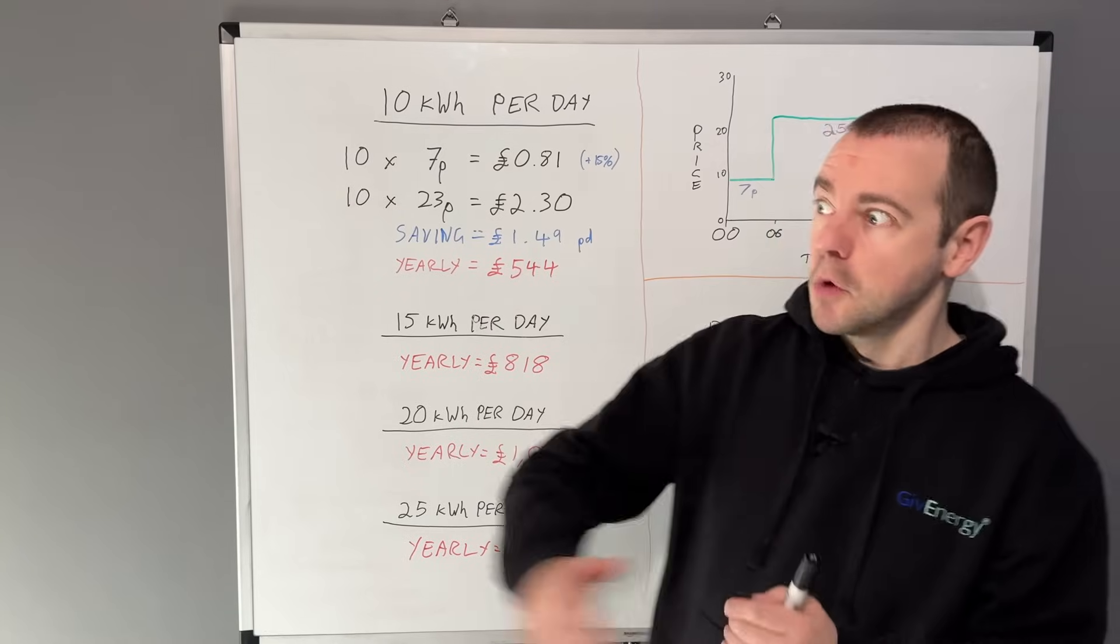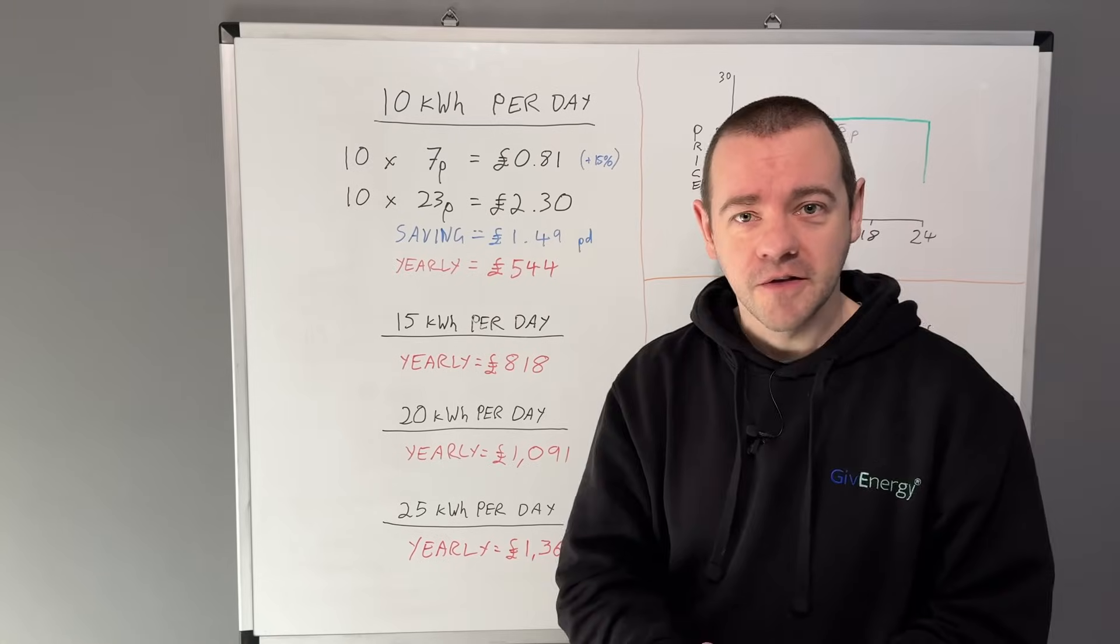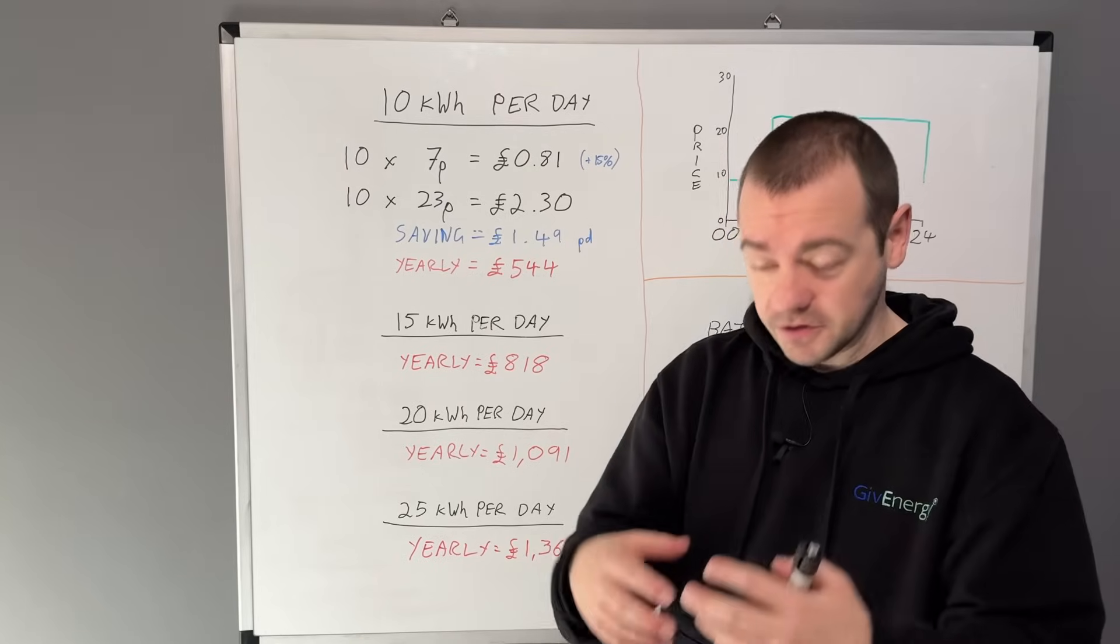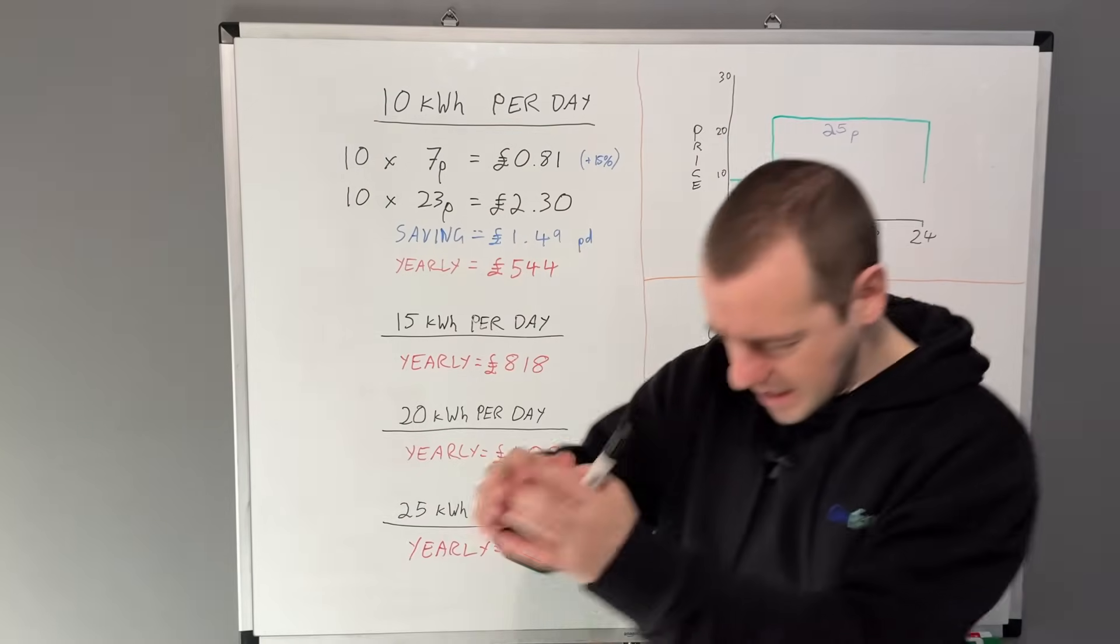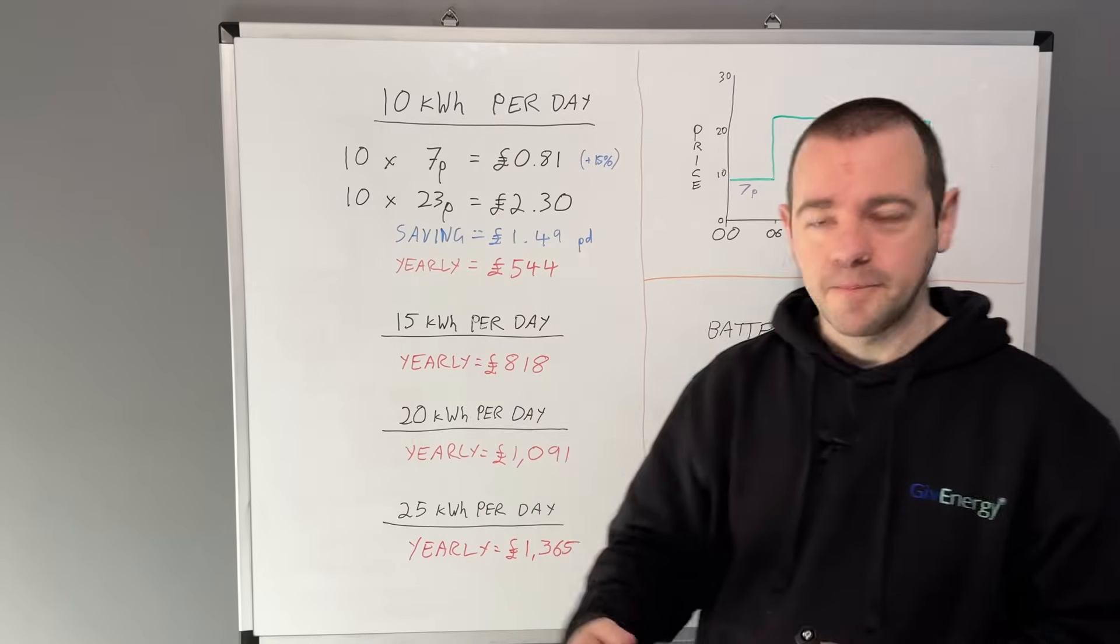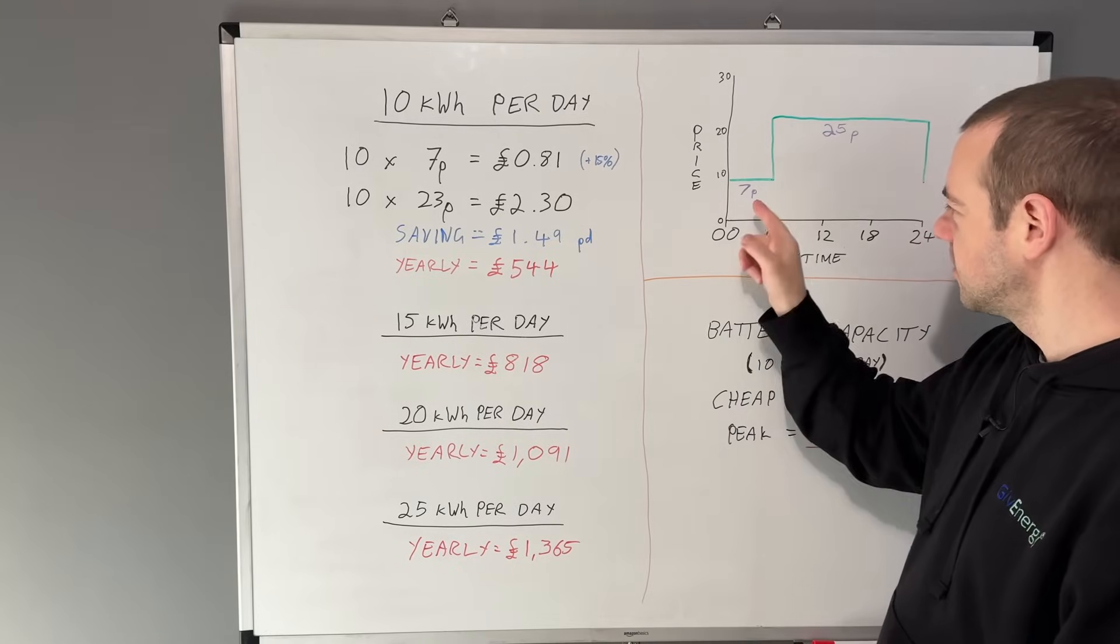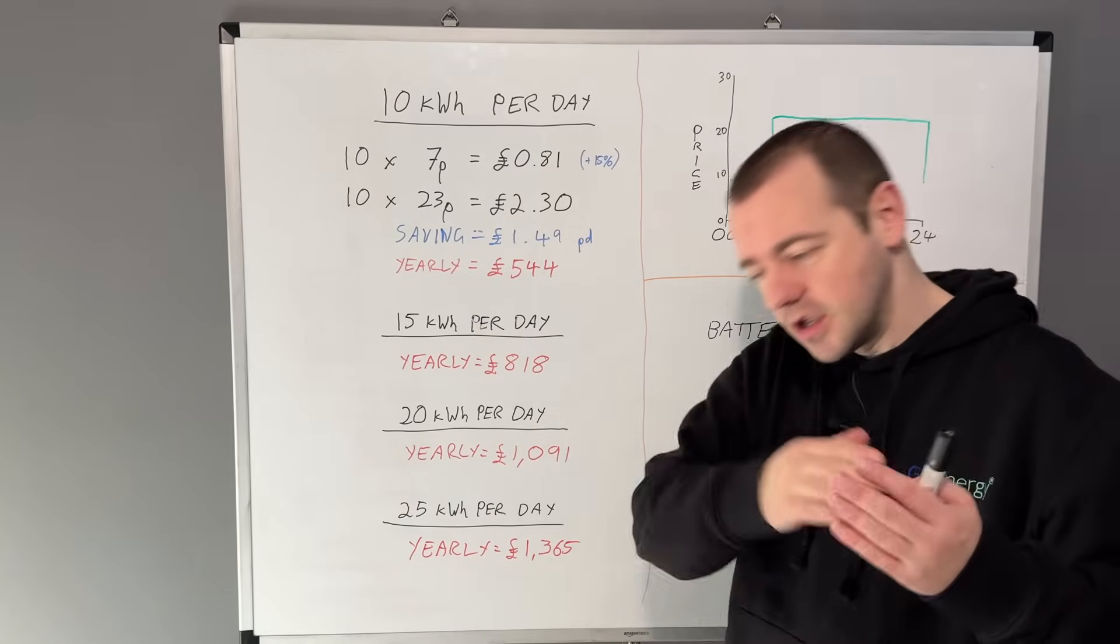Think of it like going to a supermarket and buying a month's worth of toilet roll when they're on offer. Then you use the toilet roll that you bought at the cheap price for the rest of the month, and then the special offer's back on again and you load up again and keep doing that. It's like a predictable sale every night—electricity is on sale at 7 pence, and the battery's storing that cheap electric to power the house through the rest of the day.